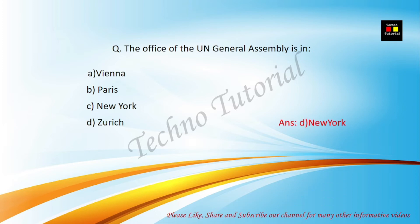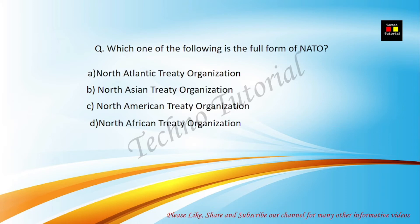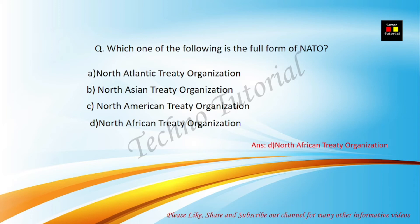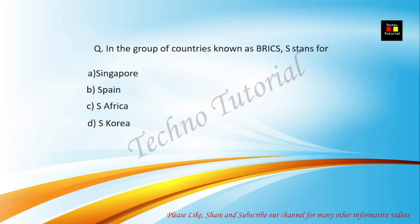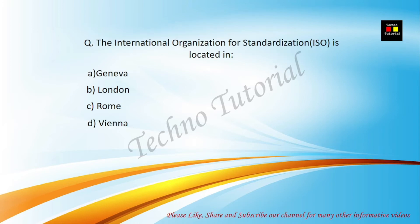The office of the UN General Assembly is in New York. Which of the following is the full form of NATO? Options: North Atlantic Treaty Organization, North Asian Treaty Organization, North American Treaty Organization, North African Treaty Organization. The correct answer is D — North Atlantic Treaty Organization.